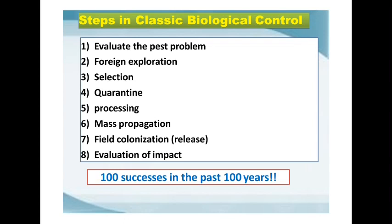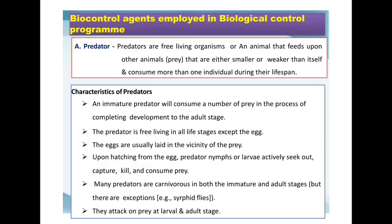These are the important steps for a successful classical biological control attempt: first, evaluate the pest problem of that area; then, foreign exploration — introducing foreign predators; selection of the particular predators or parasitoids for that pest; quarantine; processing of those predators and parasitoids; mass propagation or mass culturing of the natural enemies or bioagents; field colonization or release; and finally, evaluation of the impact of those natural enemies on the target pest. Following these steps, over 100 successes have been achieved in the past 100 years.